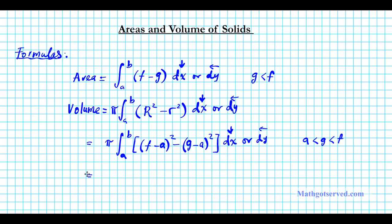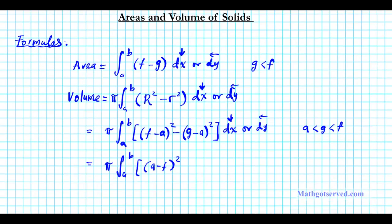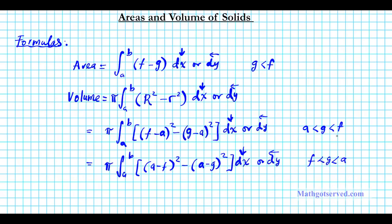The second case: pi times the integral from A to B of A minus F squared (outer radius) minus A minus G squared (inner radius). The difference here is that A is above — bigger than both functions. Use DX if your slice is perpendicular to the X axis, or DY if your slice is perpendicular to the Y axis. This orientation applies when F is less than G and G is less than A — a reversal of the order. I like to put F at the end, G in the middle, and A at the other end.